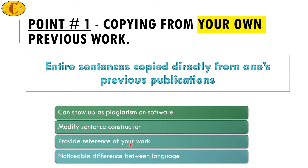Another issue is a noticeable difference in language. As you start your research, you tend to write in a certain manner, but as you gain more experience your language gets refined. By the second, third, or fourth publication, your writing style may be vastly different. If you copy directly from your first publication, the difference in writing styles will be clearly visible and may also be flagged. Reviewers read large numbers of papers and know exactly when the language changes from one paragraph to another.